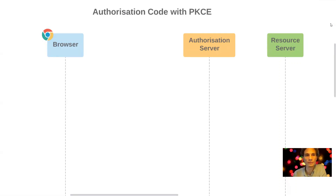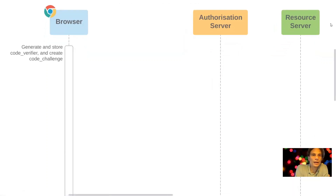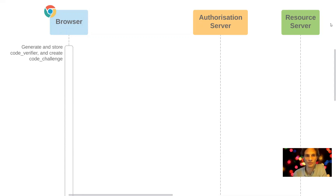The flow starts with the client generating and storing a code verifier — typically a random string used just once — and creating from that a code challenge, which is a Base64-encoded string of the SHA-256 hash of the code verifier. These two parameters are used together to demonstrate to the authorization server that the authorization code request and the token request are made by the same entity.